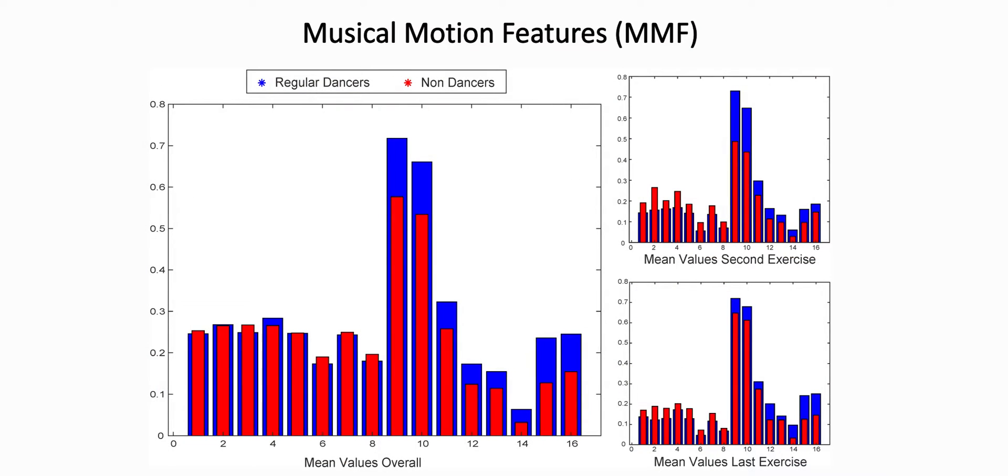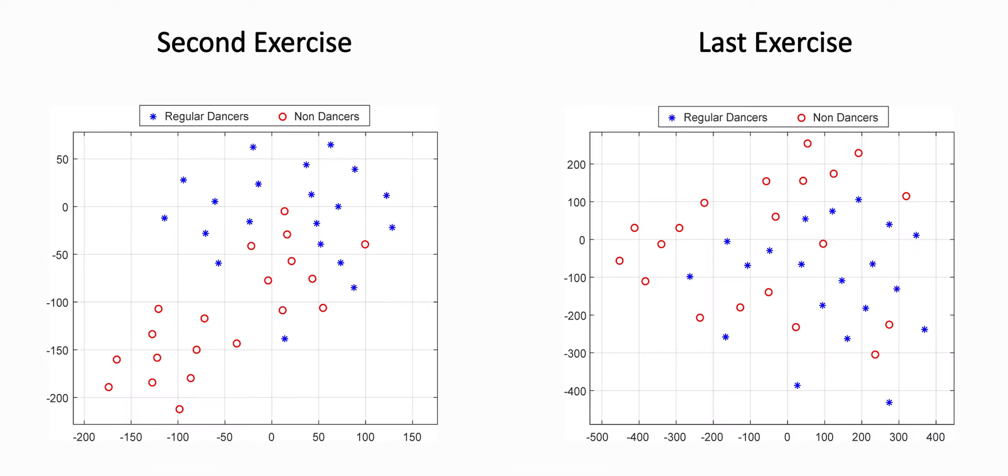More specifically, we have extracted a number of music motion features for each user at different exercises and compared their average values prior and after training. We then compared the motion profiles between the first on the left and last exercises on the right for the non-dancers and regular dancers.